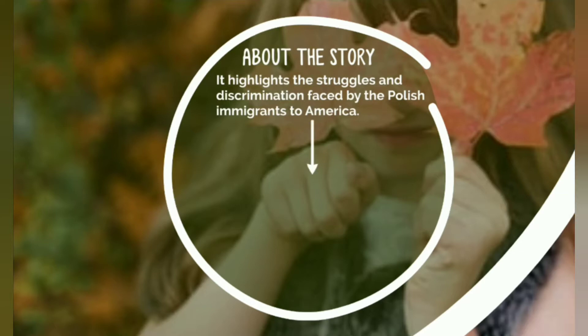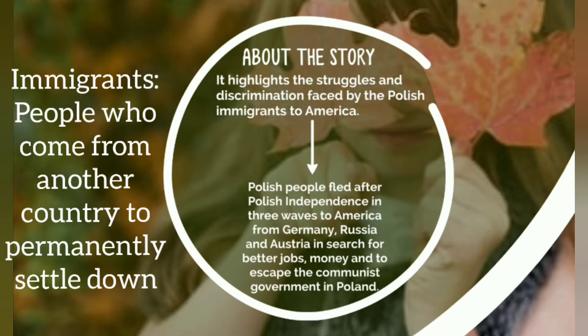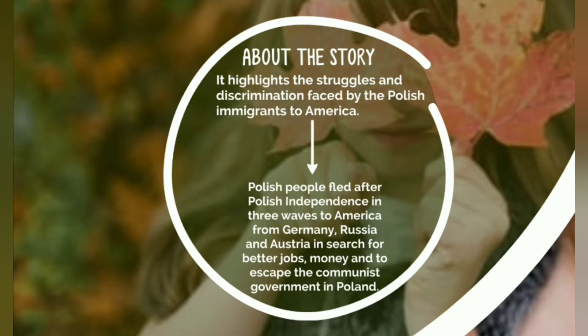Polish people fled after Polish independence in three waves to America from Germany, Russia and Austria, in search of better jobs, money, and to escape the communist government in Poland. Poland is a small country located exactly in the middle of the European continent, surrounded by seven other huge countries such as Germany. Whenever wars took place — World War 1, World War 2 — this country was the worst hit because it lay in the middle of all these huge countries.